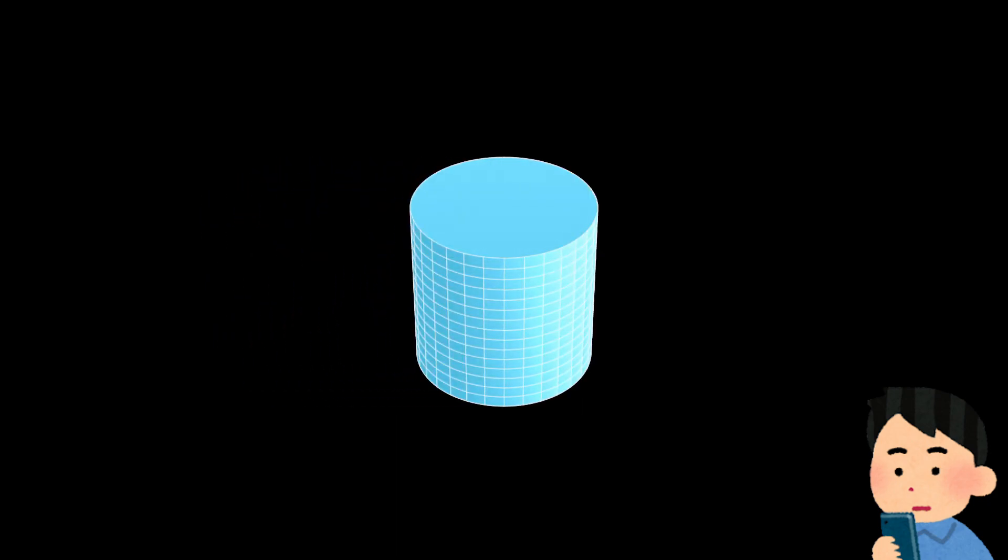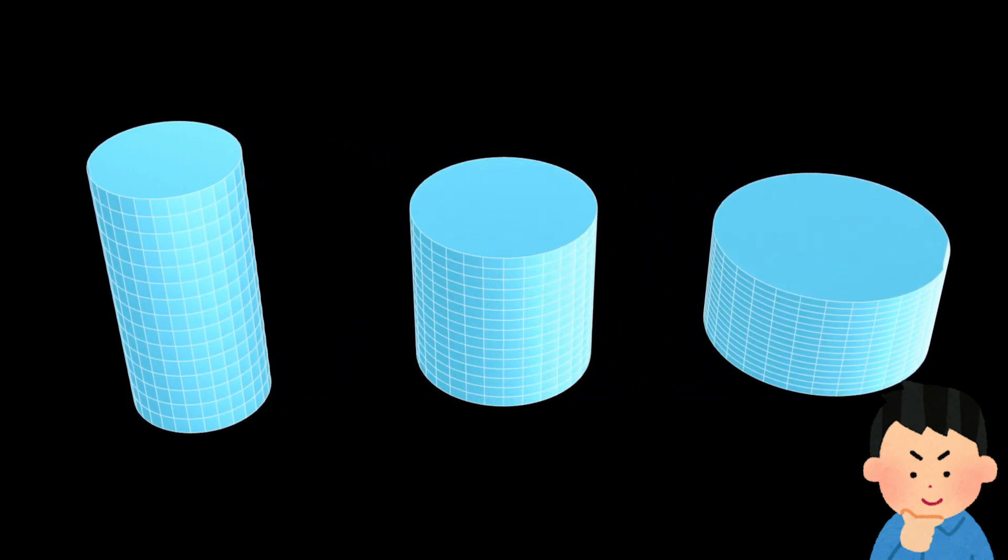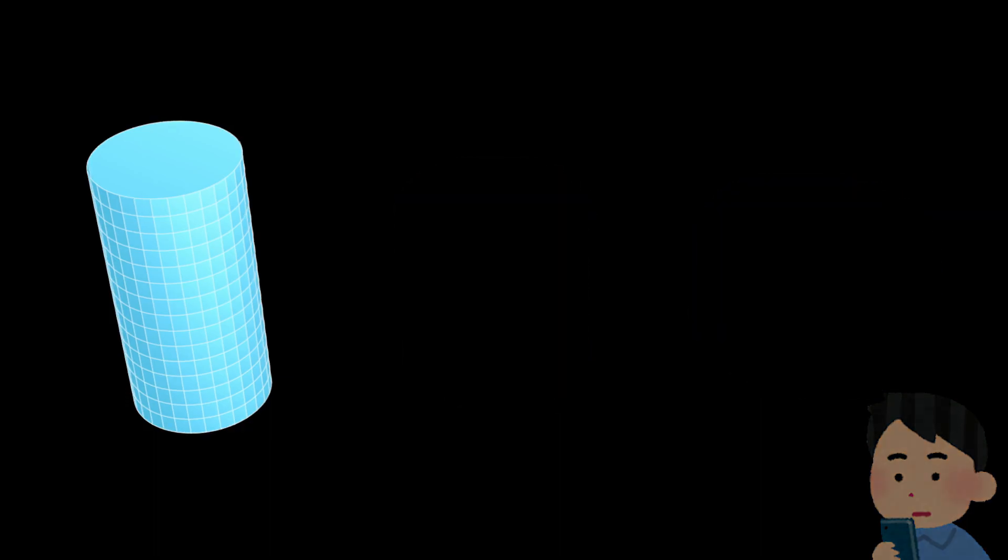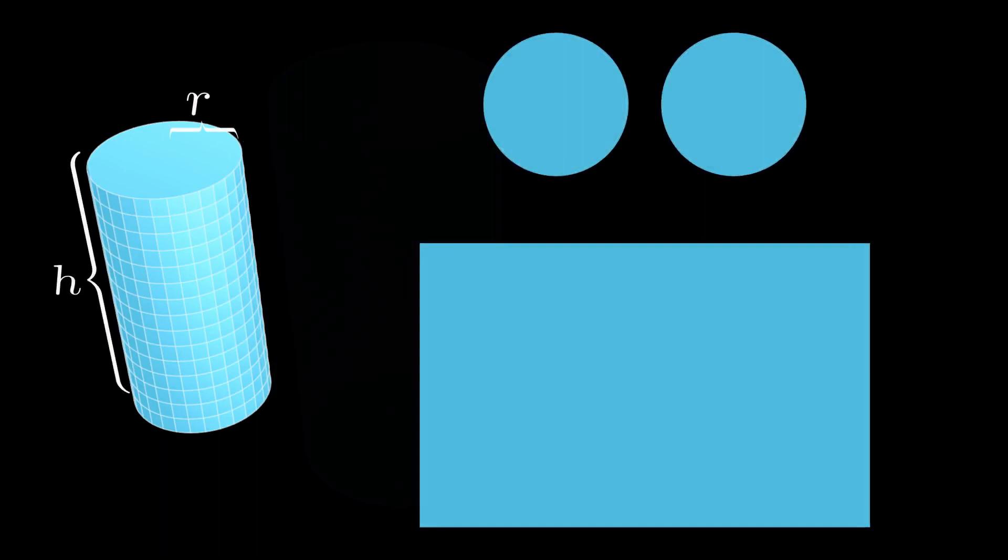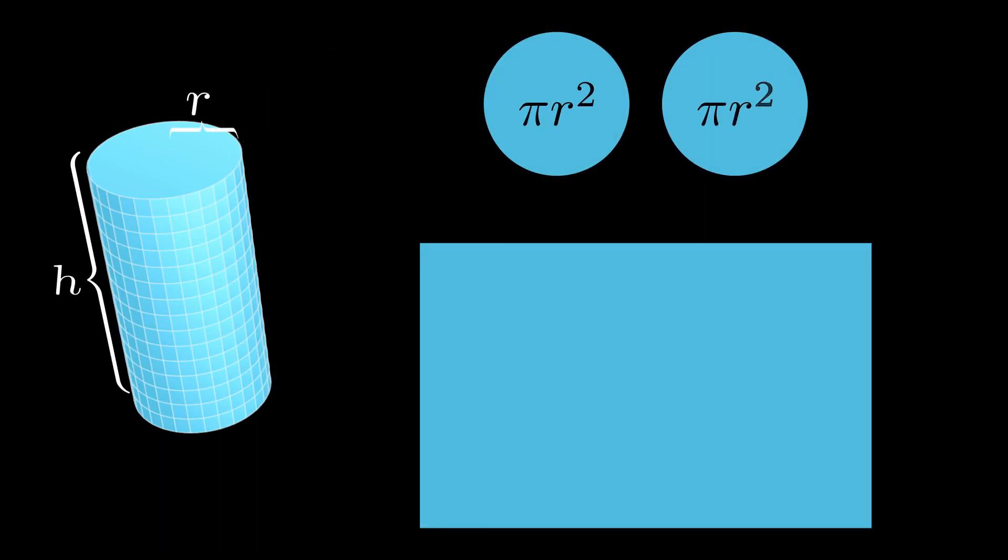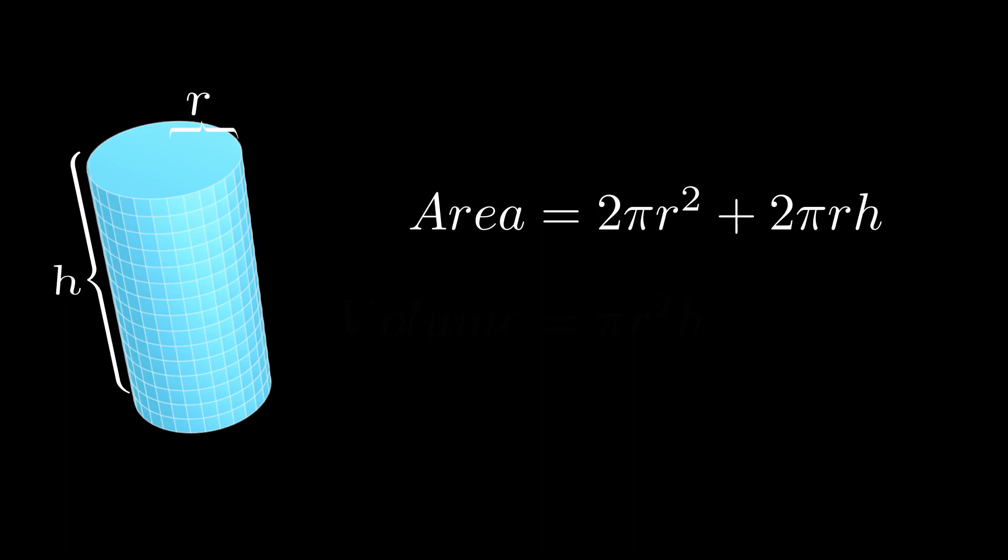And now that we have settled on the shape of the can, we can go back to our original question: how to make them as cheaply as possible. And for that, we want to design a cylinder-shaped can with the smallest surface area. First, notice that we have two parameters that we can adjust in our design: the radius and the height of the can. Before we continue, let's have a quick refresher on geometry. For a cylinder with radius r and height h, its surface area is equal to two times the circle area, 2πr², plus the rectangle area, 2πrh, and the volume is equal to its cross-sectional area times height, which is πr²h.